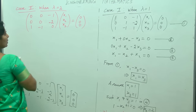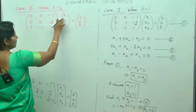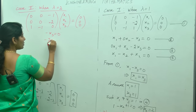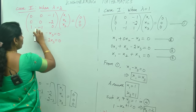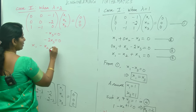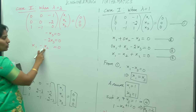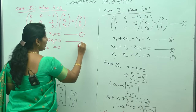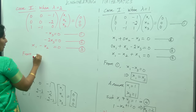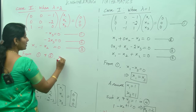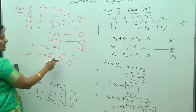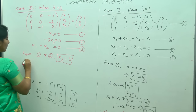From this matrix, writing rows times columns as equations: equation 1 is minus x3 equals 0; equation 2 is minus 2x3 equals 0; equation 3 is x1 minus x2 equals 0. From equations 1 and 2 we can directly say x3 equals 0.